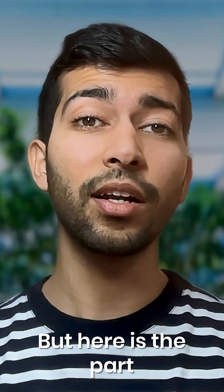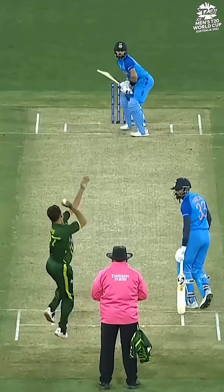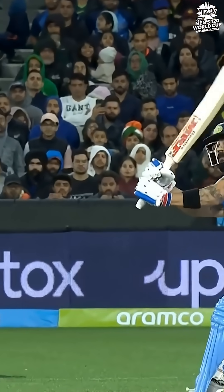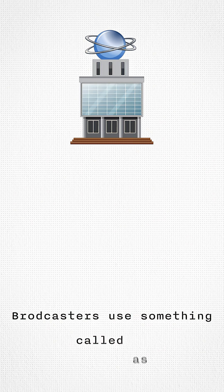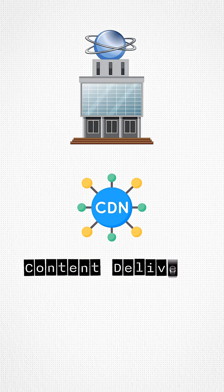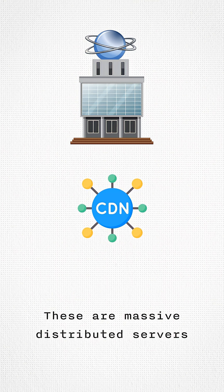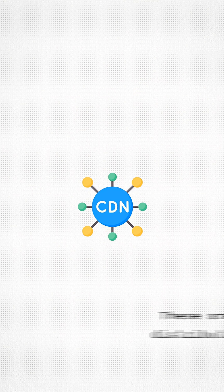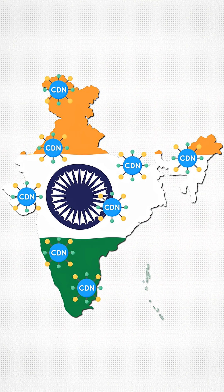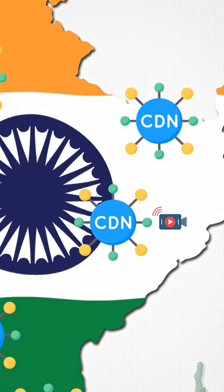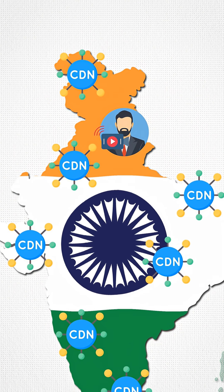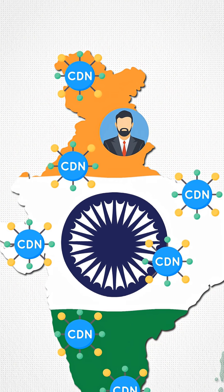But here's the part most people don't know about. To handle millions of people watching that Virat Kohli 6, broadcasters use something called CDNs, or Content Delivery Networks. These are massive distributed servers that sit across the country just for this purpose. They store tiny chunks of the live video and deliver them from the nearest possible location to you.